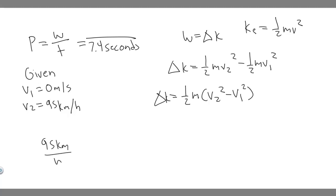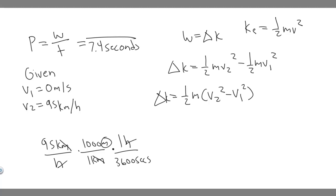To convert 95 kilometers per hour to meters per second: multiply by 1,000 meters per kilometer, then divide by 3,600 seconds per hour. That gives 95 × 1,000 ÷ 3,600 = 26.389 meters per second. So v₂ equals 26.389 m/s.